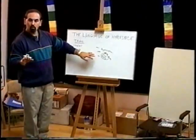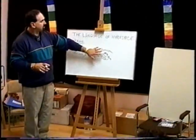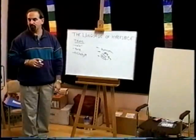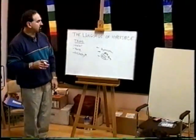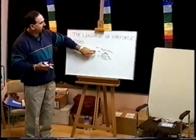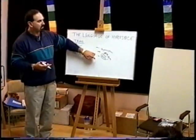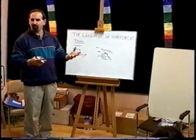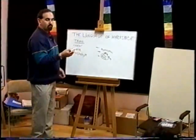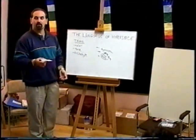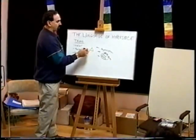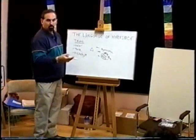You, as a being, exist in all of those layers and all those levels. You'll notice that in creation, three is important — there's always three stages of everything. That's why one of the first archetypes that you learn is the triangle, which is what the pyramids are all about.